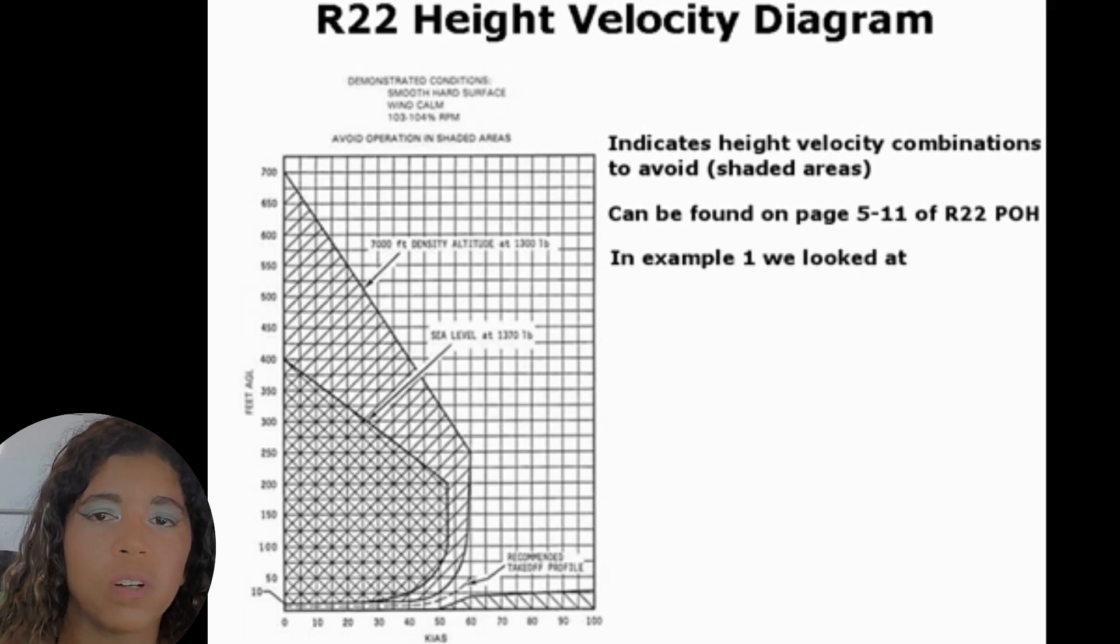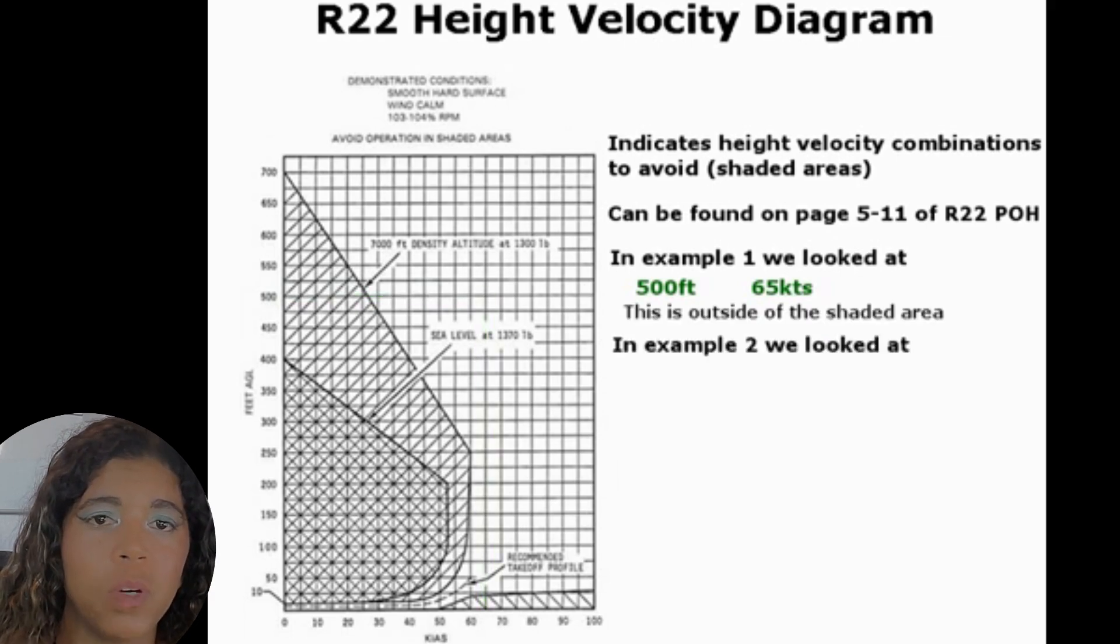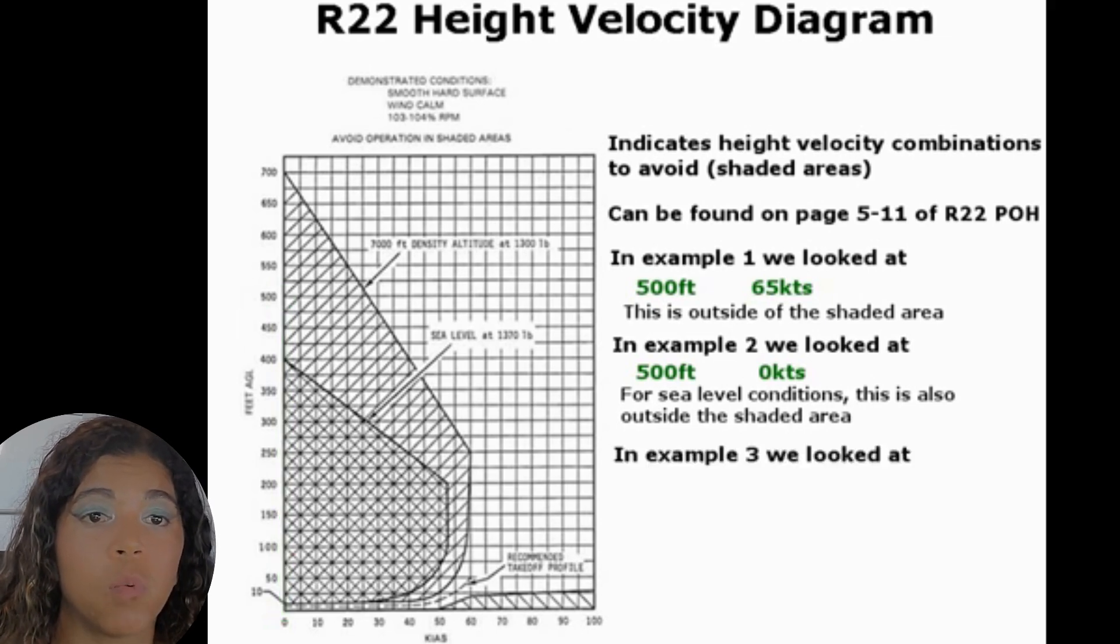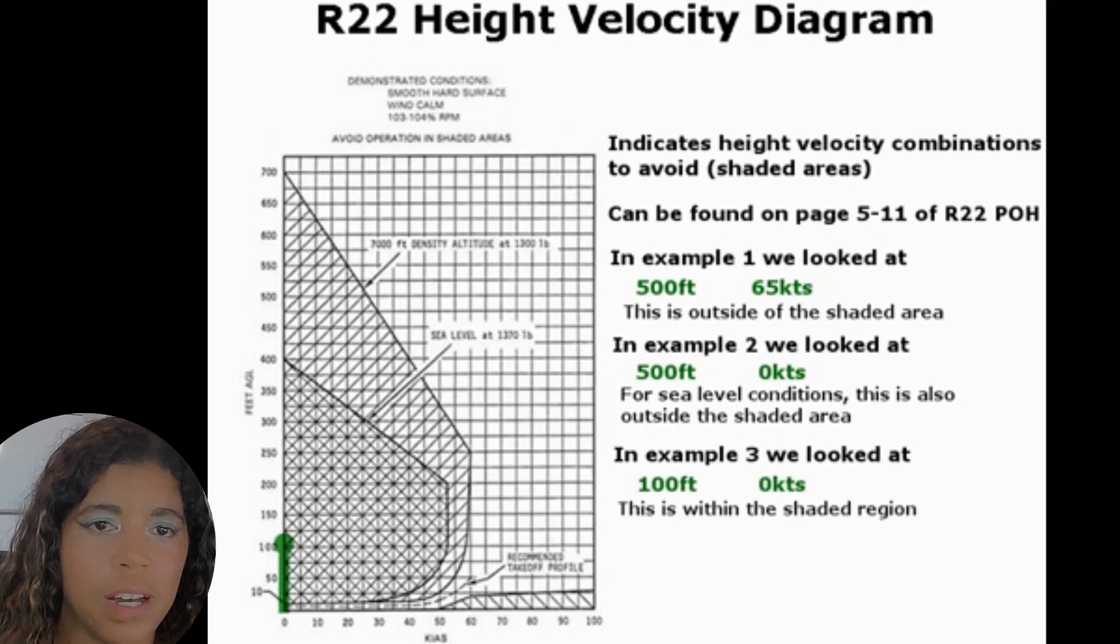In the first example we looked at 500 feet and 65 knots. If we draw this dot on the diagram we can see it's outside of the shaded region. In the second example we looked at 500 feet and zero knots and as we can see for sea level conditions this is still outside of the shaded area. However in the case of 100 feet and zero knots we can see this is clearly in the shaded region of the HV diagram.